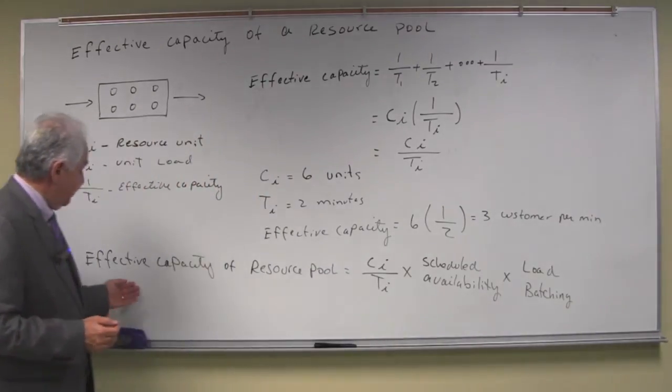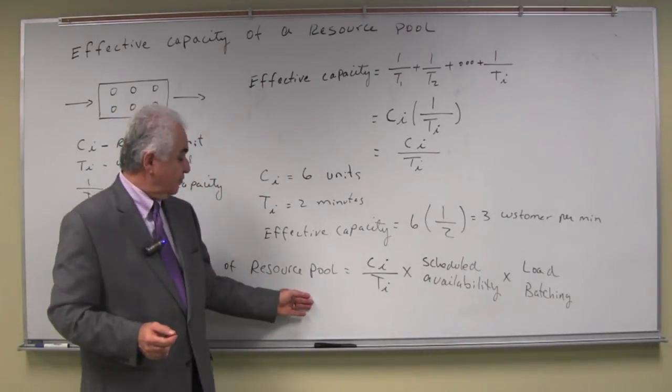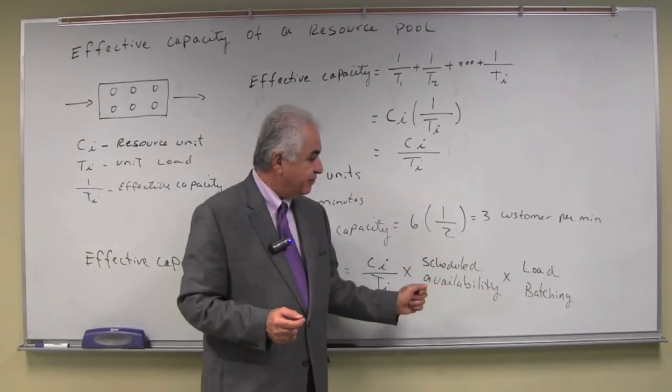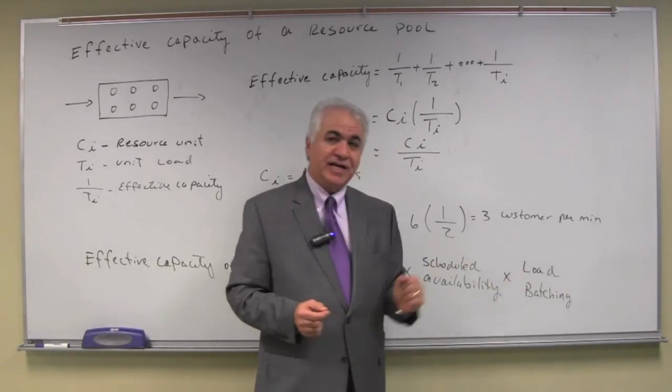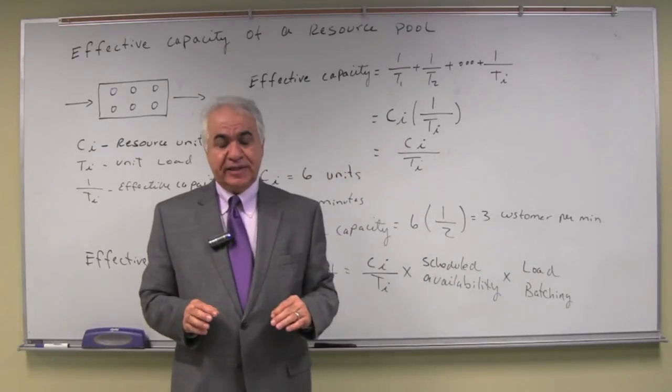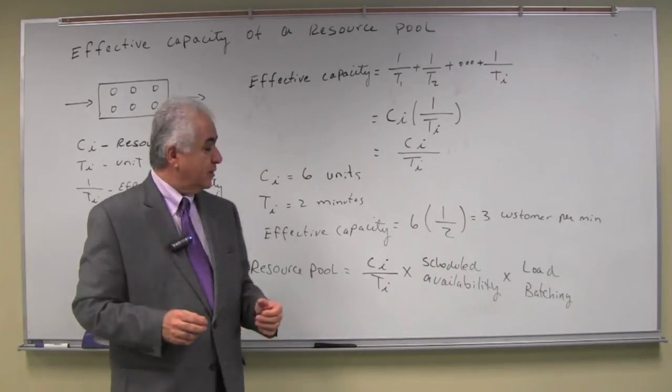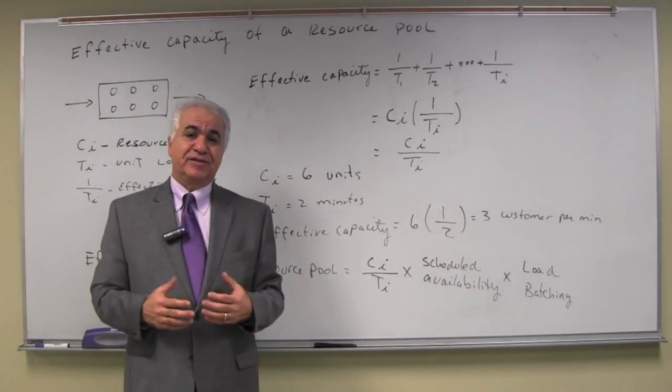Therefore, the effective capacity of a resource pool is C sub i over T sub i, times scheduled availability, times load batching. In our next section, we'll introduce a complete example that takes some of these elements into account.